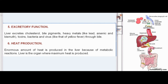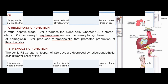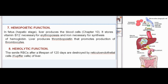Heat production: enormous amounts of heat are produced in the liver because of metabolic reactions; it is the organ where maximum heat is produced. Hemopoietic function: in the fetus (hepatic stage), the liver produces blood cells. It stores vitamin B12 necessary for erythropoiesis and iron necessary for synthesis of hemoglobin. The liver also produces thrombopoietin that promotes production of thrombocytes.